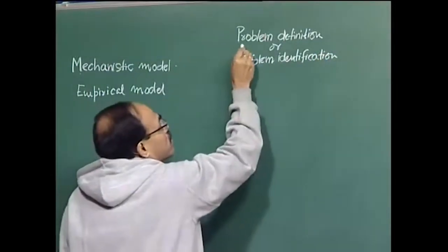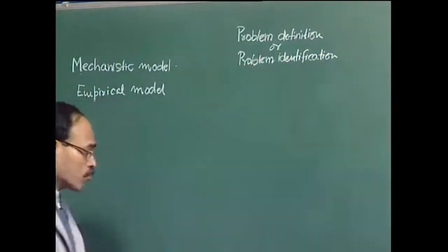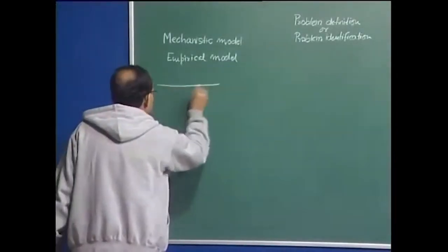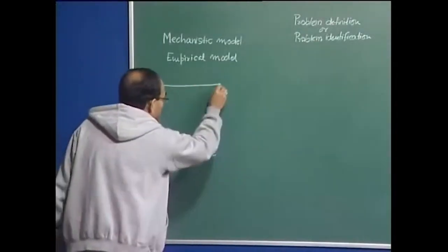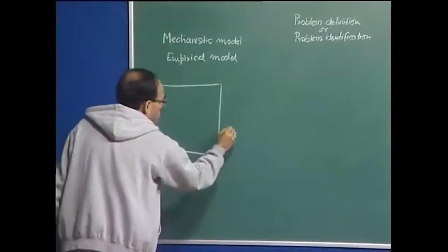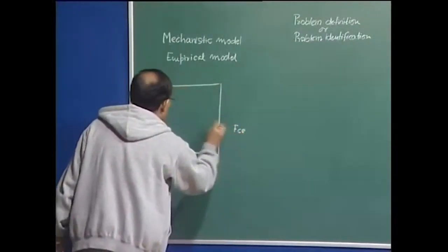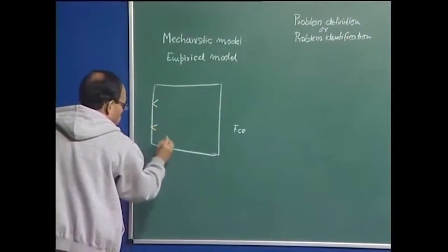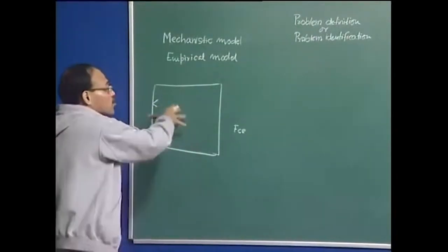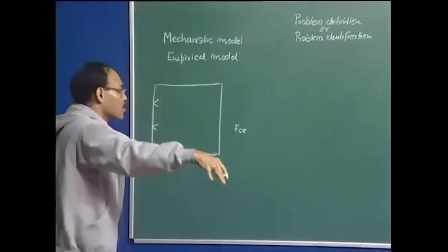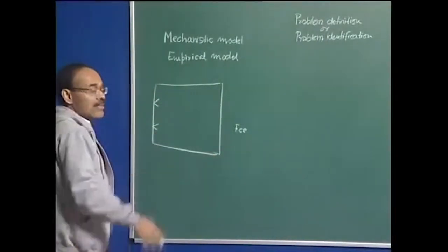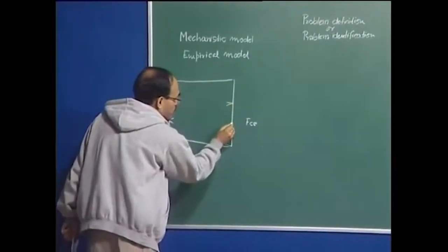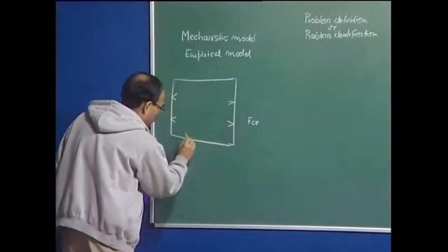Let me illustrate this with an example. Suppose I have a furnace — this is a furnace chamber. Suppose it is a gas-fired furnace, so you have burners from all sides. This is the top view, looking from the top — that is the top section of the furnace, and we can see that there are gas burners here from all sides.